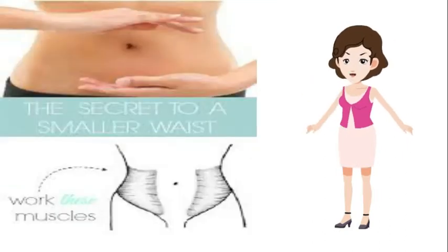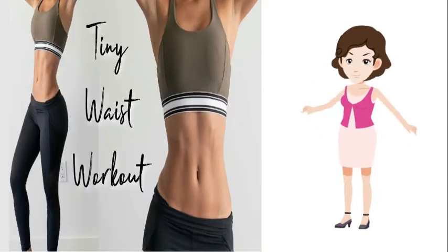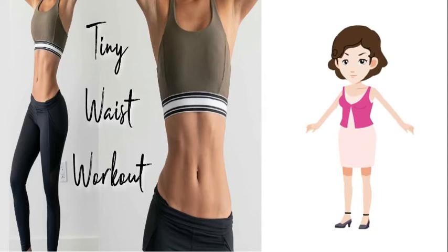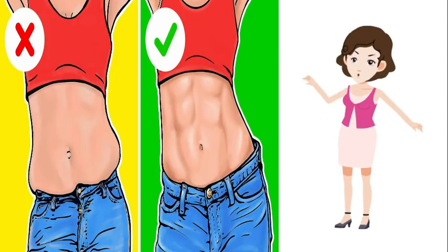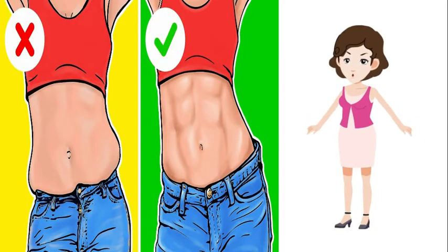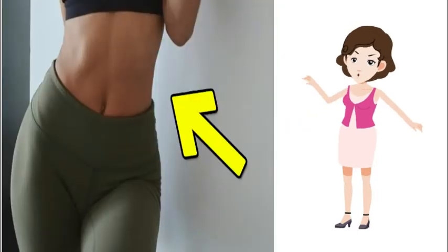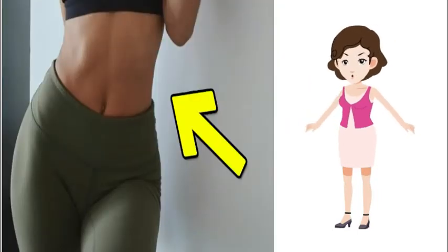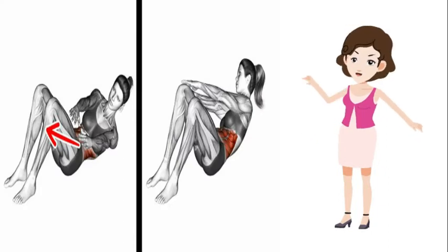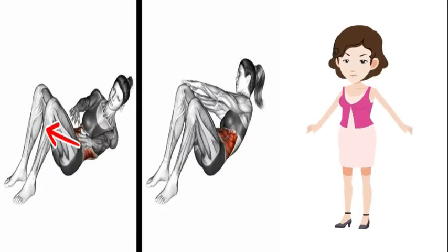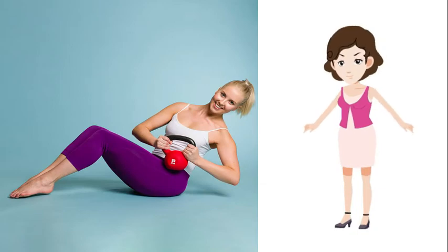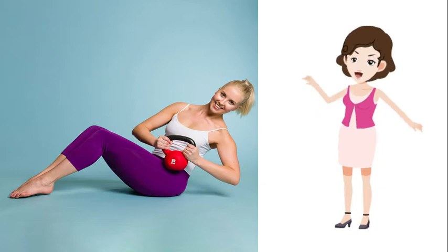The external and internal oblique muscles are responsible for the waist shape and contribute to that hourglass form that many of us want to get. If a slim waist and a flat tummy are your goals, you should be focusing on toning and strengthening these muscles. That's the reason why you need a mix of static exercises, body weight dynamic exercises and stretching.